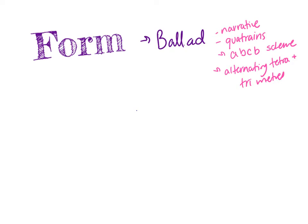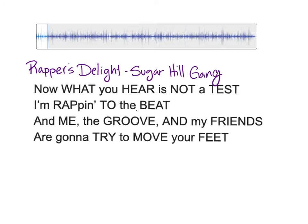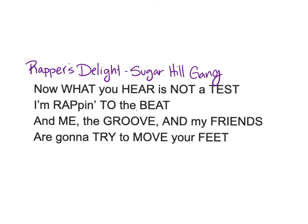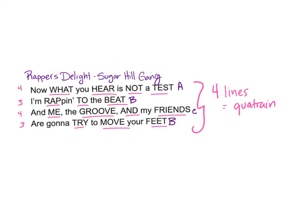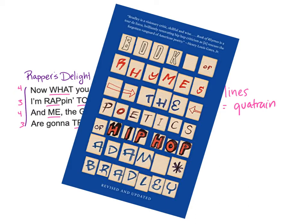Fun fact: the hip-hop classic Rapper's Delight follows this form, so you could say that Rapper's Delight is somewhat a ballad. And if you don't believe me, let's check it out. "Now what you hear is not a test, I'm rapping to the beat. And me, the groove, and my friends are gonna try to move your feet." There you go — four lines, alternating with tetrameter and trimeter, with the rhyme scheme of ABCB. If you're interested in the poetics of hip-hop, you can check out the book called Book of Rhymes. Our school library has a copy, if we ever actually get to go back to school one day. I highly recommend it.